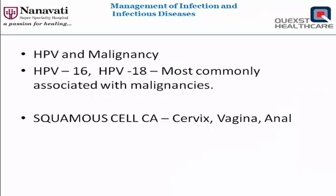HPV types 16 and 18 are the most commonly associated with malignancies, particularly squamous cell cancers — namely cervical, vaginal, and anal cancers. These are the most common sites of HPV-associated cancers.